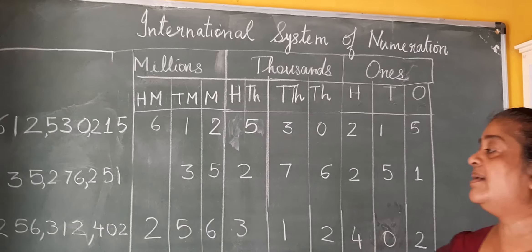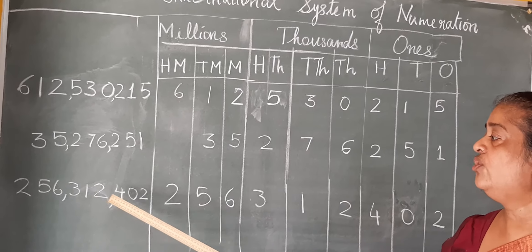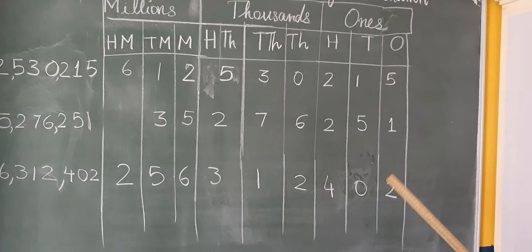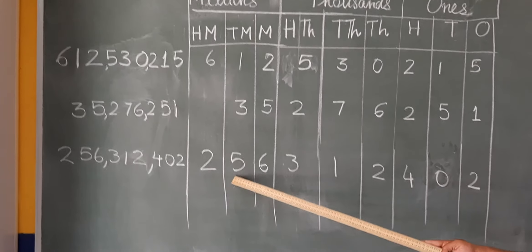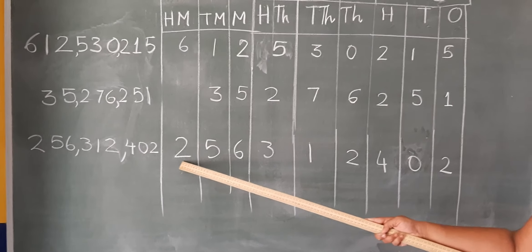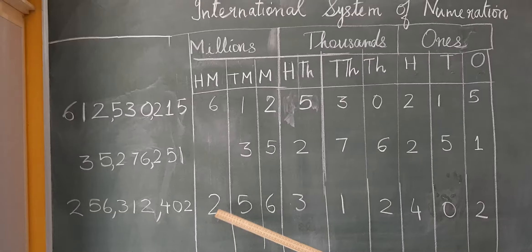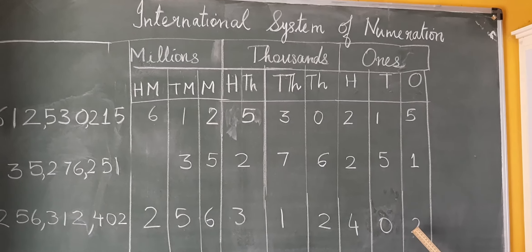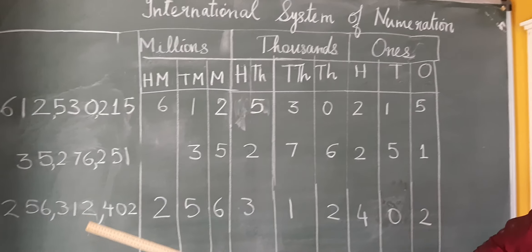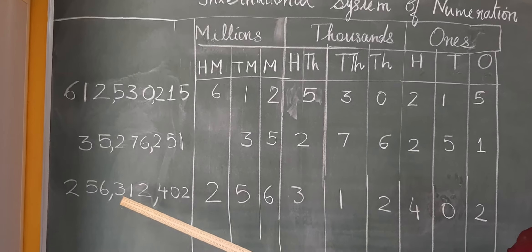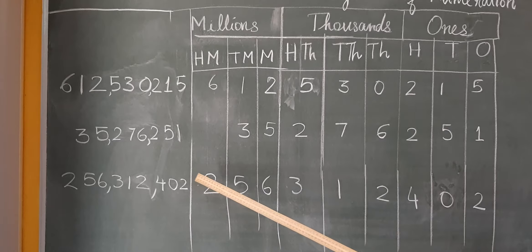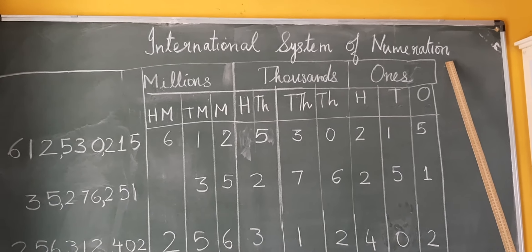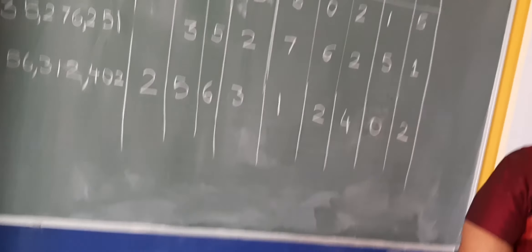Let us take another number. This is a bigger number: 256312402. When I look at the first three digits in the millions period, I will say 256 million, 312 thousand, 402. This is how I write this number. Which system is this? This is the international system of numeration.